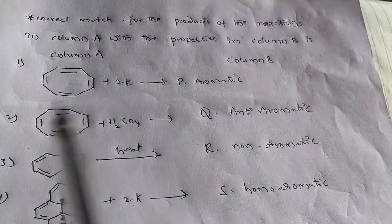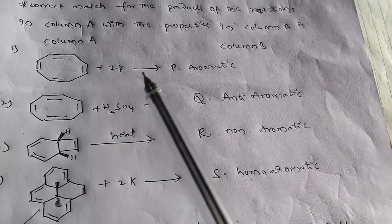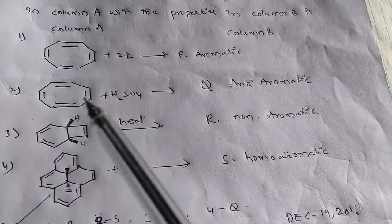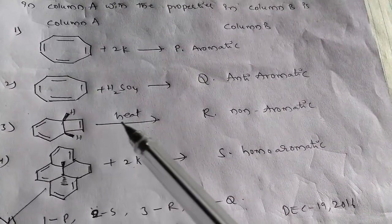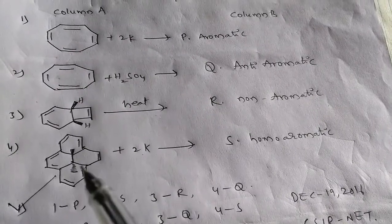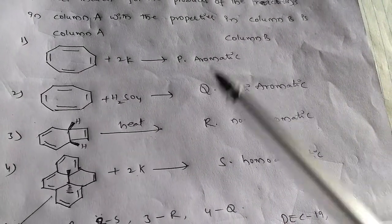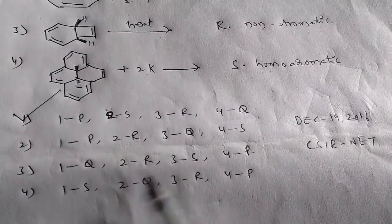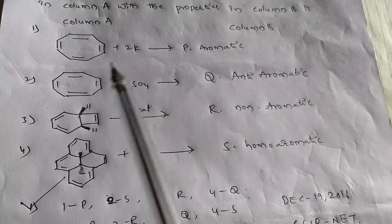We have two columns, column A and column B. In the first one, cyclooctatetraene plus 2K gives some product — we need to find which property it belongs to. Second one is cyclooctatetraene reacting with H₂SO₄. Third is a bicyclic compound on heating. Fourth is a tetracyclic compound reacting with 2 moles of potassium. We should match the correct properties with these reactions, and we have four options.